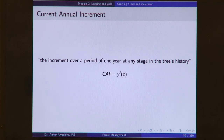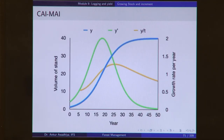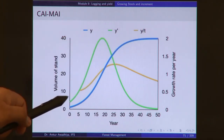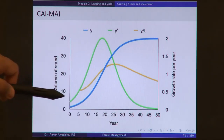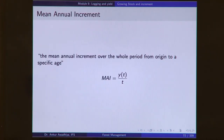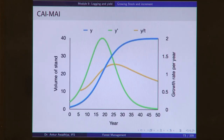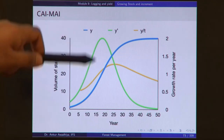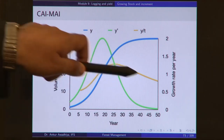If this specific period is made to be one year, then we call it current annual increment (CAI), which is the increment over a period of one year at any stage in the tree's history. If we look at the logistic growth equation, the CAI will be given as the differential of this curve, or y prime of T. Y prime is essentially the slope of this curve — very low in the early portion, maximum at the point of inflection, and decreasing in the stationary phase.